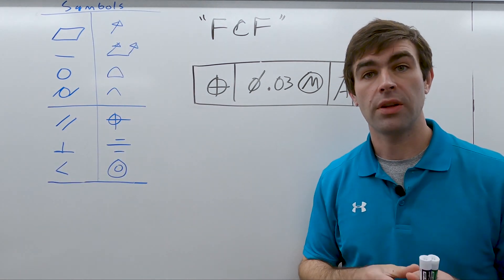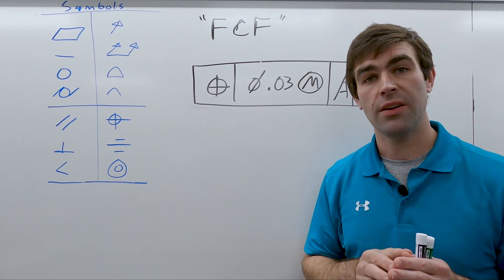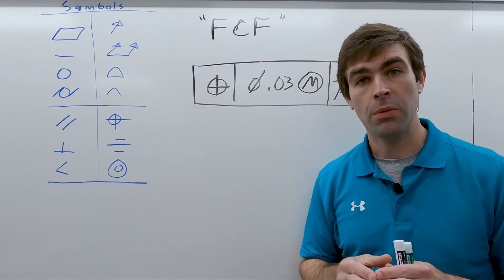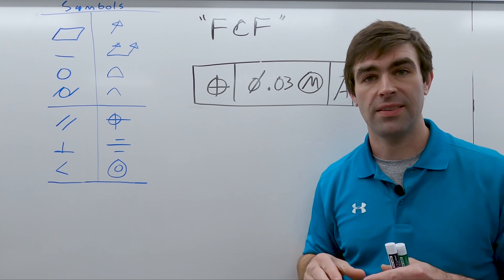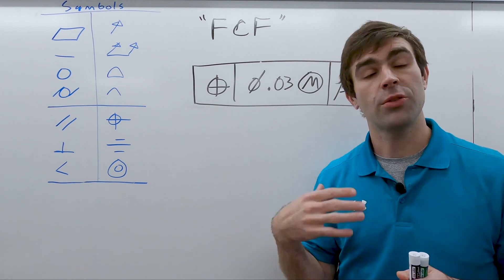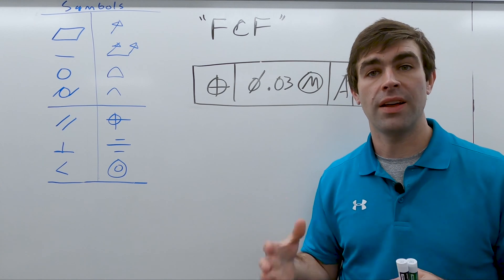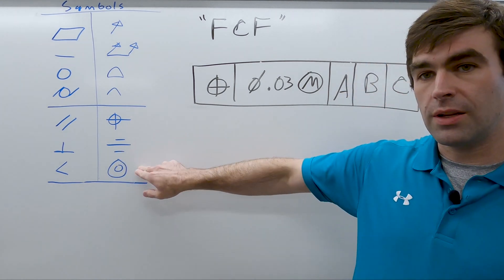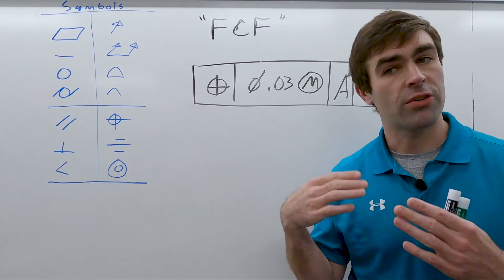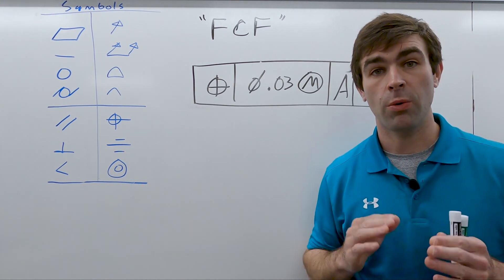The first compartment always is going to hold a geometric characteristic symbol. There are 12 symbols in the current 2018 standard, and then two more symbols that were discontinued in 2018 but were in 2009, 1994, 1982, and I think the one before.